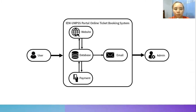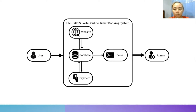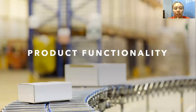This figure shows the IEM-UMPSS portal online ticket booking system, where the user will engage with the system by searching for the system on the server. The process between the server or website, the database, and the payment happen at the same time. When the user has completed their session and fulfilled all requirements, the collected information will be sent to the admin by email. Admin will verify the process that happened between the user and the system. For events that involve payment, the user will receive an email receipt generated by the system.